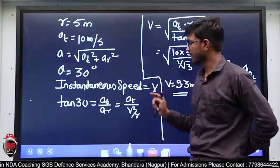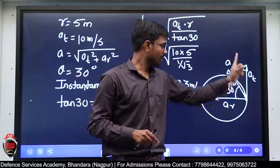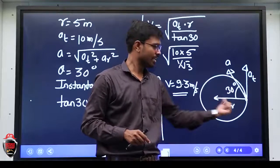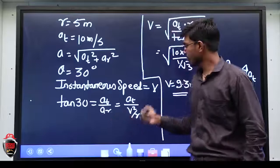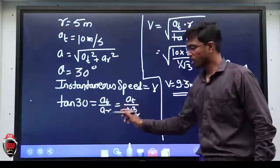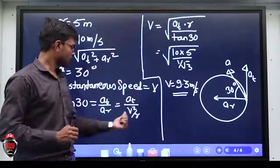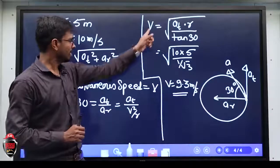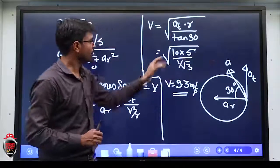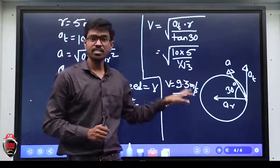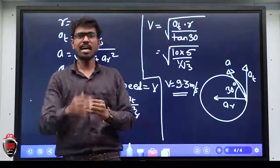Instantaneous speed V कैसे मिलेगी — diagram से: tan 30 = at/ar। ar = V²/R formula है। इस formula में से V separate किया, सारे known terms इधर ला लिए। Value substitute की — tan 30 = 10/(V²/5), solve करने पर V = √(50/tan30)। Answer मिला: 9.3 meter per second।